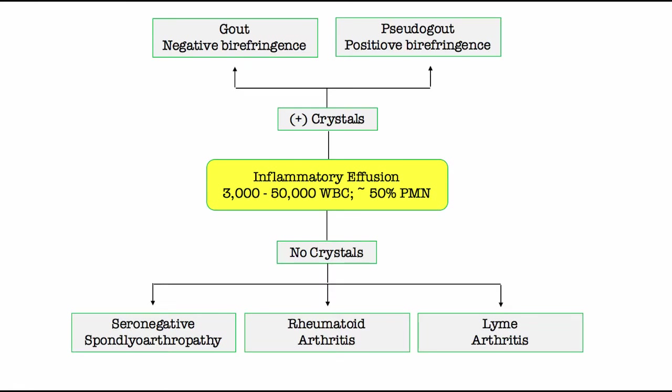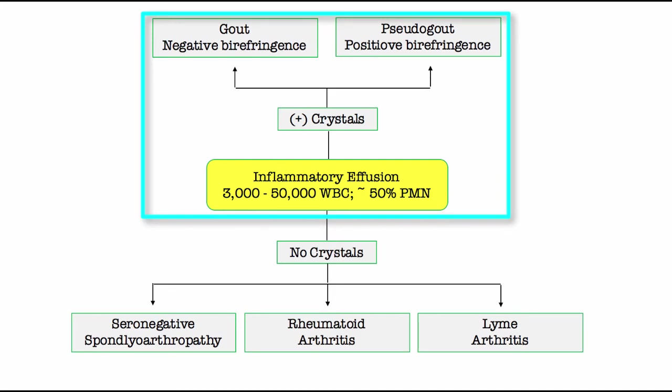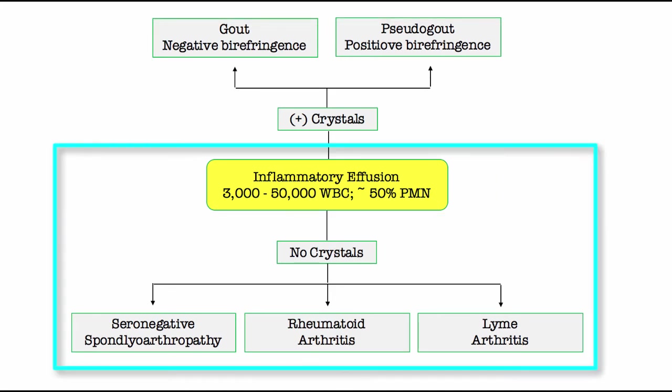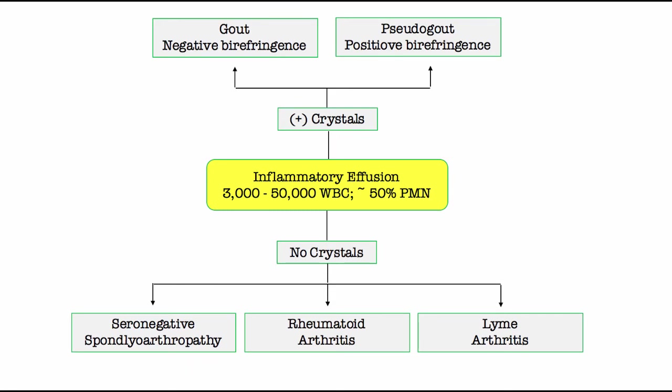Here is the differential diagnosis of an inflammatory effusion. On the top part of the diagram, we see the two crystalline arthropathies. The bottom part shows the other key conditions most likely on Step 1, including seronegative spondyloarthropathy, rheumatoid arthritis, and Lyme arthritis. Remember, Lyme arthritis presents with an inflammatory, not a septic effusion — the arthritis is a reactive process to spirochete antigens.